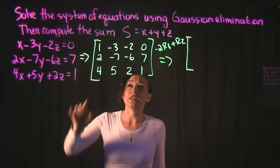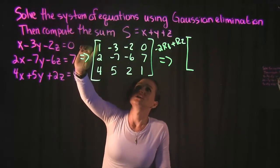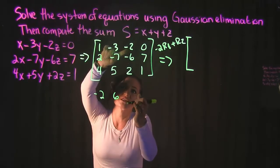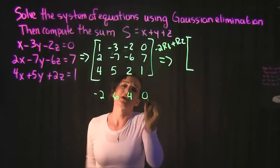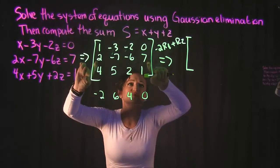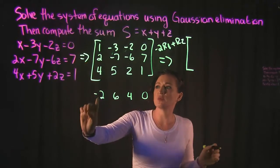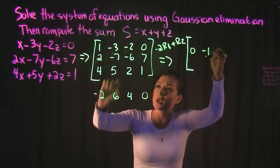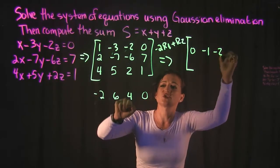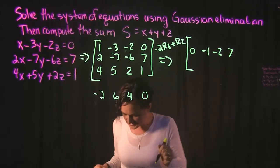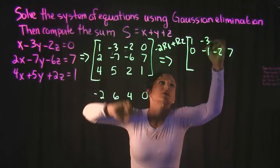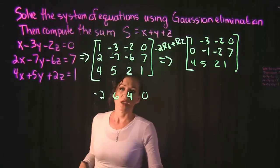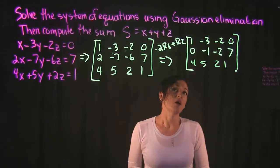We multiply everything in row 1 by negative 2: 1 times -2 is -2, -3 times -2 is 6, -2 times -2 is 4, and 0 times -2 is 0. Adding that to row 2: 2 plus -2 is 0, -7 plus 6 is -1, -6 plus 4 is -2, and 7 plus 0 is 7. Everything else stays the same: row 1 is 1, -3, -2, 0 and row 3 is 4, 5, 2, 1. That gives us the zero in that position.